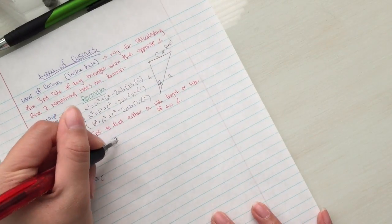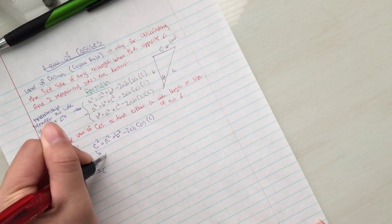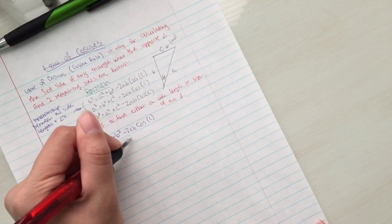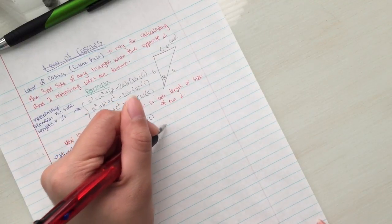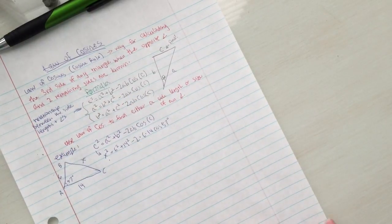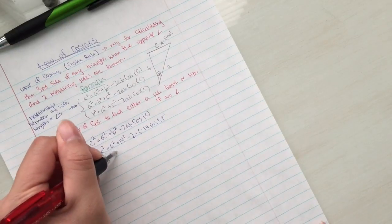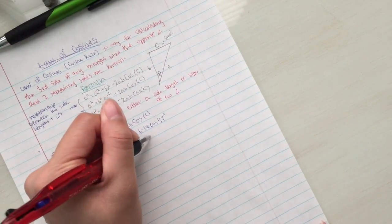You can plug in the given variables and numbers into the formula c squared equals a squared plus b squared minus 2ab cosine of c using x, 6, 14, and 57 degrees. Thus, x squared is the third side, so x squared equals 6 squared plus 14 squared minus 2 times 6 times 14 times cosine of 57, which is the included angle.